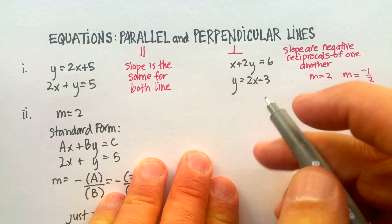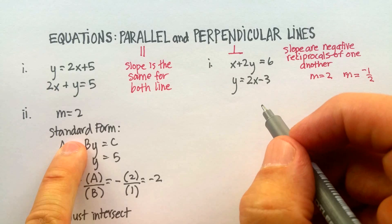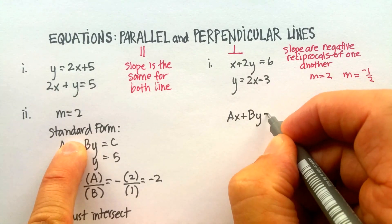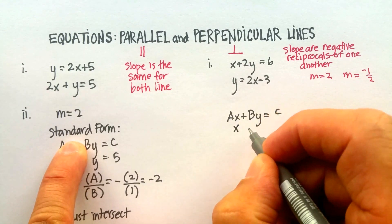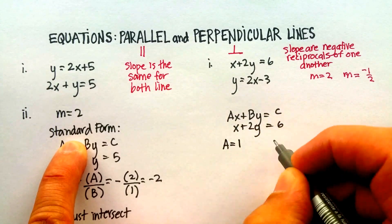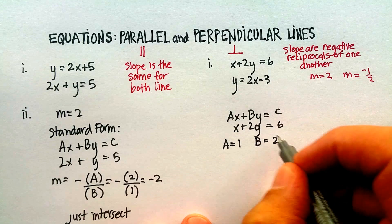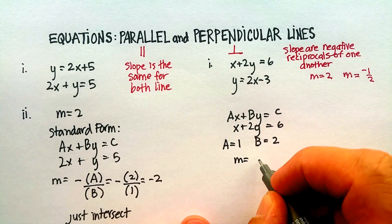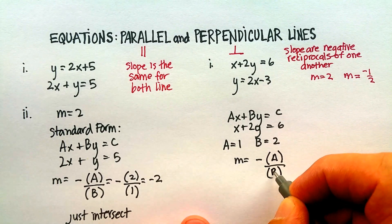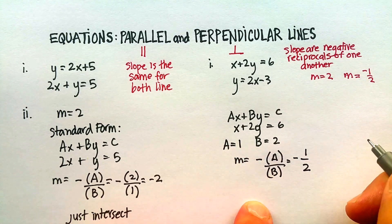Again, we've noticed two things here. In the first equation, again, we have the standard form, Ax plus By equals C. And again, if I just line these up, I see that my A is 1, my B is 2. So in this form, the slope would be equal to negative A over B, which would just be negative 1 over 2.